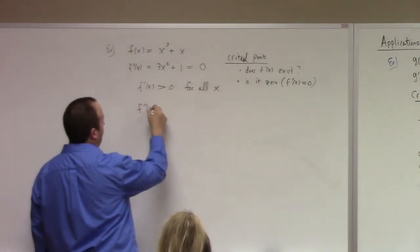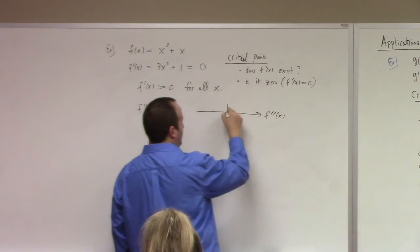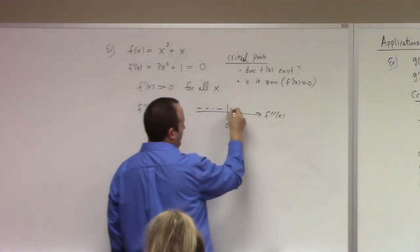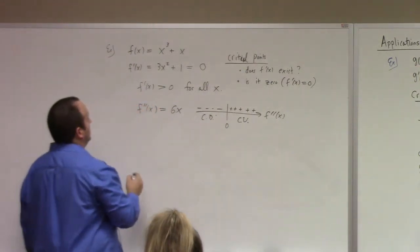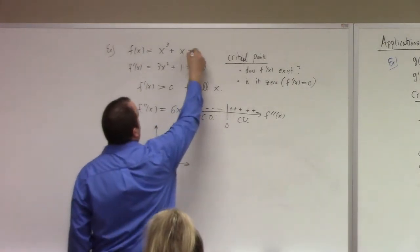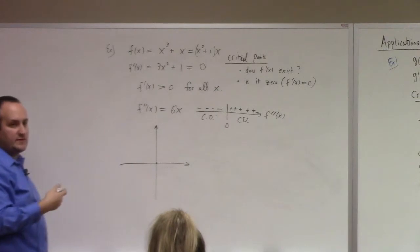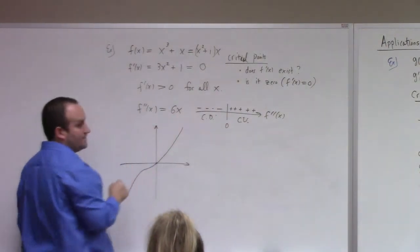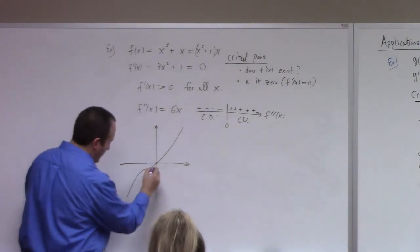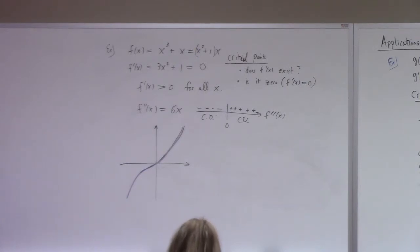But if you look at f prime prime of x, what do you get? Six x. So if you draw the sign chart for f prime prime of x, you've got one... You've got zero. And so apparently, it's concave down. And it's concave down for negative x. It's concave up for positive x. And so I can sketch the graph. By the way, this has zeros where? At zero. Zero is the only zero. Because x squared plus one is never zero. It's an irreducible quadratic. And apparently, it's concave down. And then concave up. So it shifts from being concave down shaped over here to being concave up shaped over here like that. I was increasing no critical point.